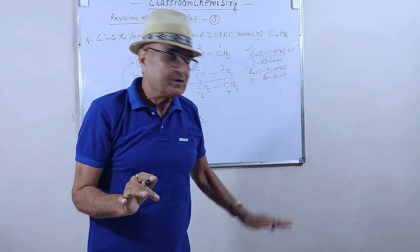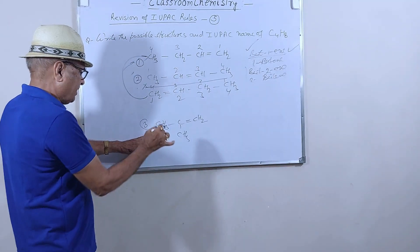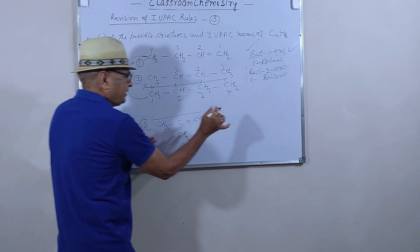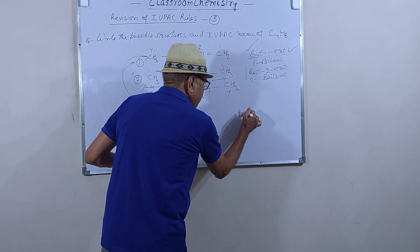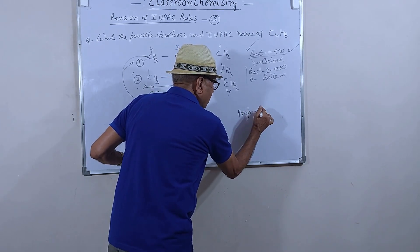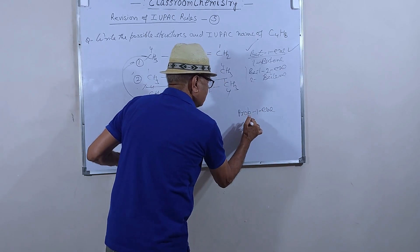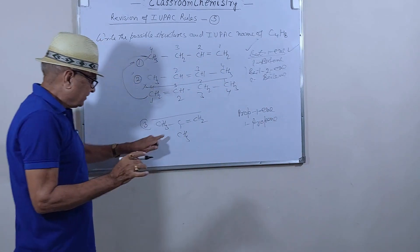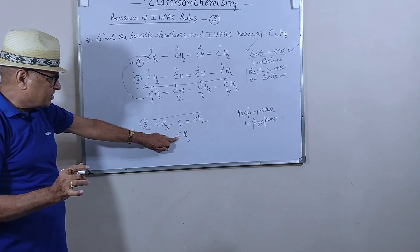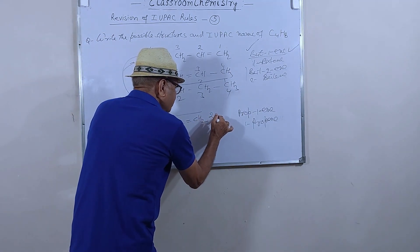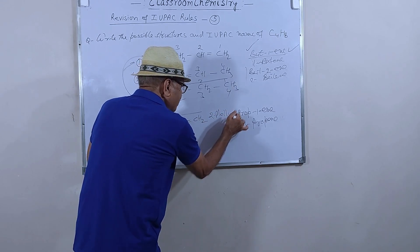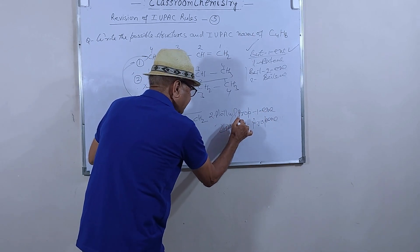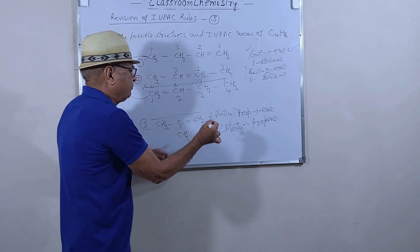Now find the name of the third structure. The longest chain is of three carbons, so it is propene. On the second carbon, a methyl group is present. So you write 2-methylpropene. The name is 2-methylpropene. Both the names 'prop-1-ene' with a methyl substituent and '2-methylpropene' are correct, but 2-methylpropene is the preferred IUPAC name.